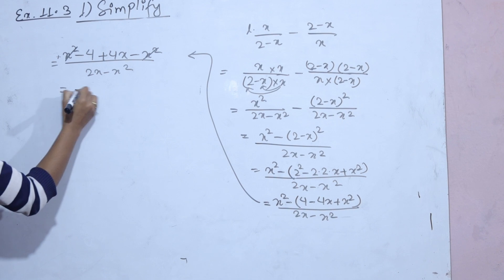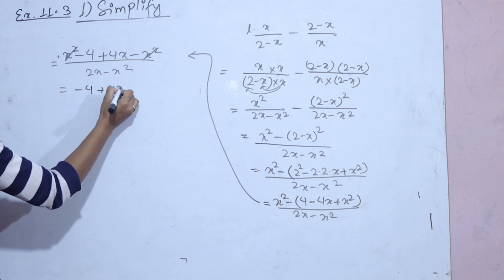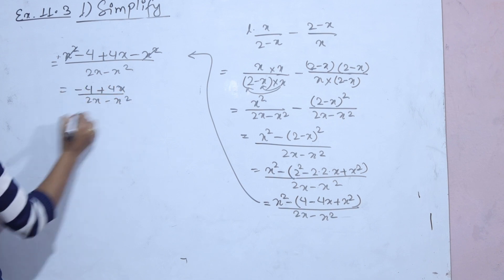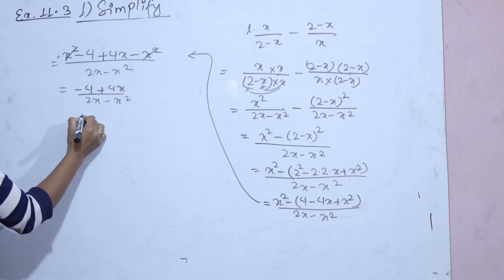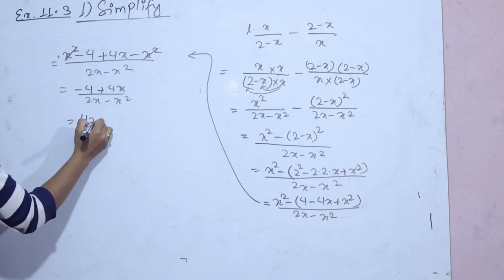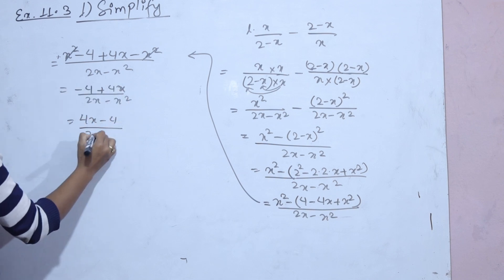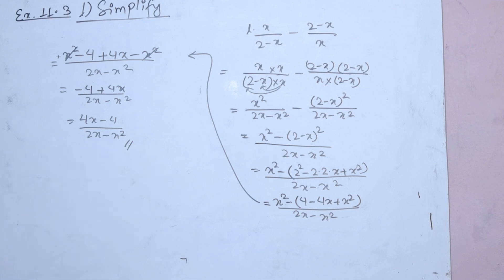The final result is: minus 4 plus 4x by 2x minus x squared, plus the square root minus 4x minus 4 by 2x minus x squared. This is actually the question solved — the answer.